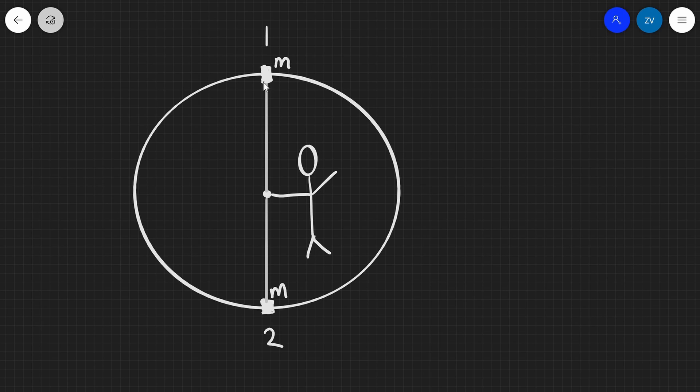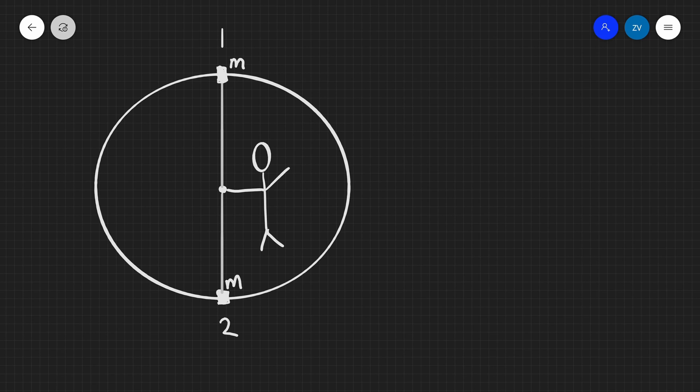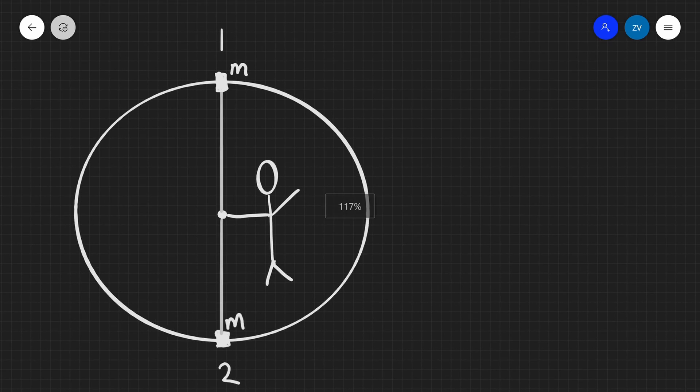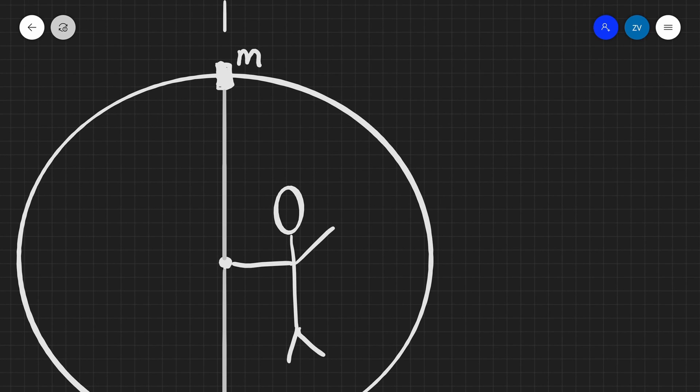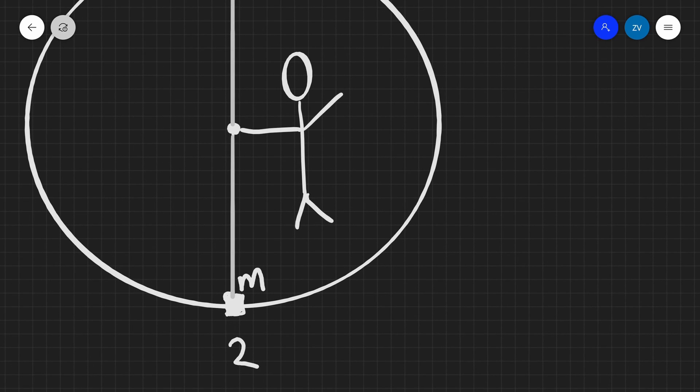So that means that this mass M is going to be moving around, first of all downwards until it reaches position two and then moving along this trajectory upwards along this arc back to position one. How do the forces compare in those two positions? Position one against position two.